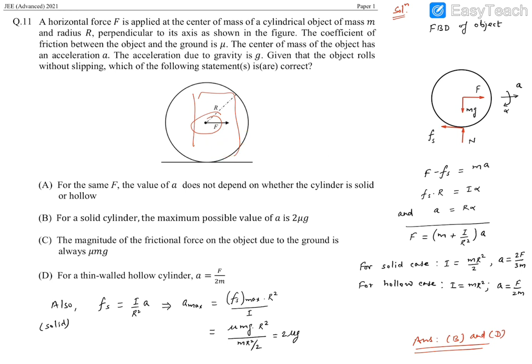This point will have a tendency to move forward, hence friction has to be in backward direction. It's just like the front wheel of your bicycle which is free. This friction is by the ground on the wheel or cylindrical object.